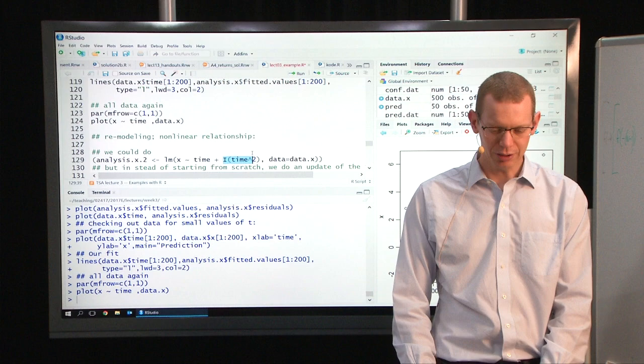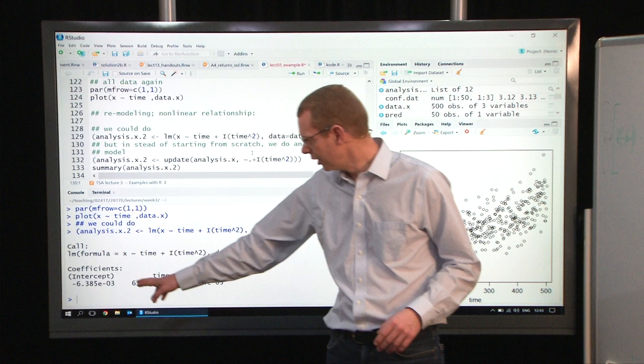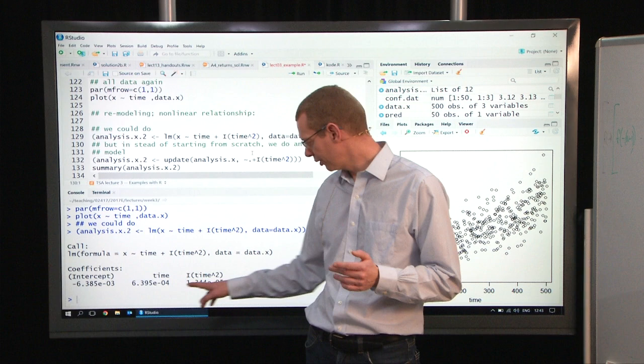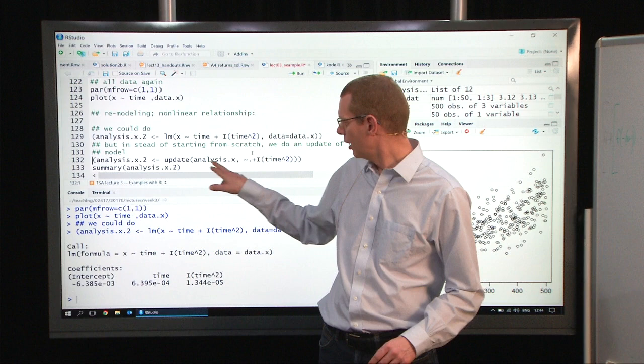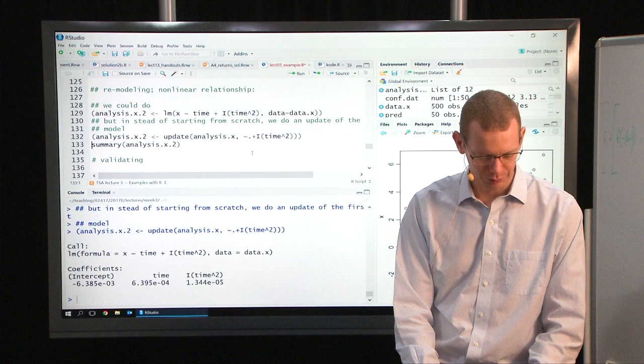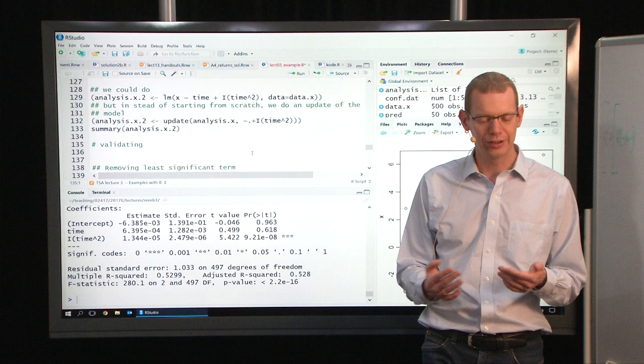If we do it with R, in order to get time squared, and not just get the interaction with itself which it won't create, I have to do the I operator here to give the identity of this. Now we estimate an intercept, a time as a slope at the initial time, and then we have the curvature out here. What we can also do is to take our previous model that we had here, and then we update it by adding the second order term. Let's look at the summary of this. What we have here is that the second order term here is highly significant, whereas both the intercept and the slope are not significant at the initial point in time.